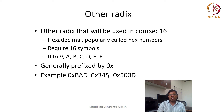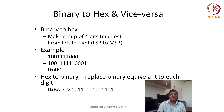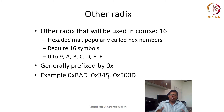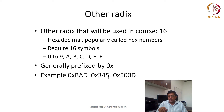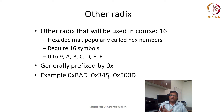Let us quickly understand why we use hexadecimal numbers. The major advantage of hexadecimal numbers is that they are a very good representation of binary numbers. If a binary number has 32 bits, writing all 32 bits would be confusing because we always have to track the index of each bit. If we convert the same 32-bit binary number into hexadecimal, the total number of digits we get is just 8, which are easy to manage and understand.